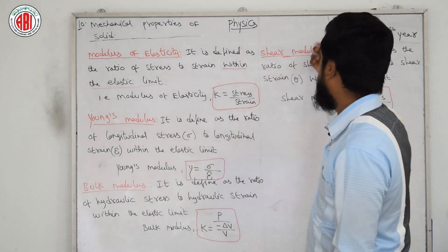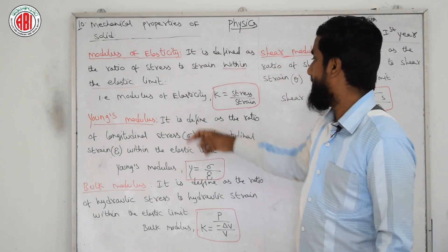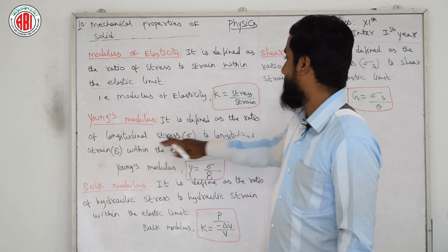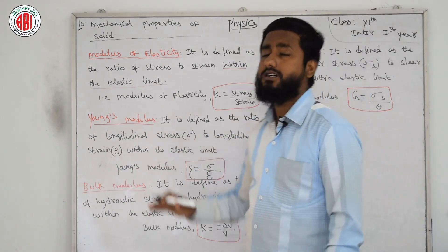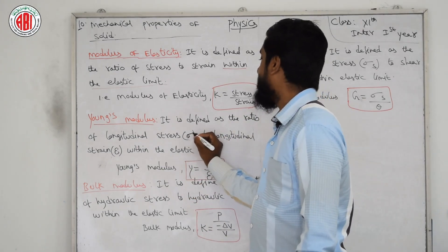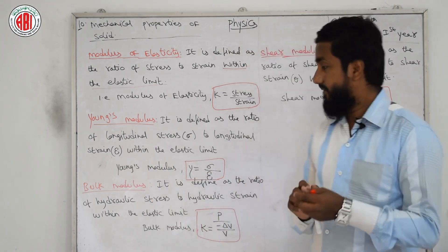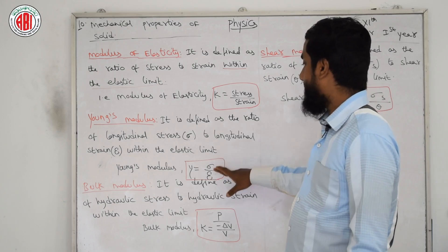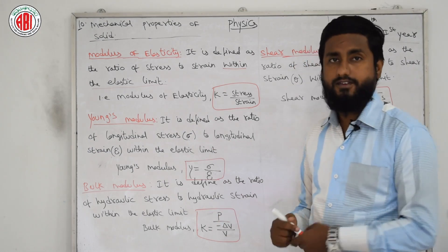Young's modulus — Y-O-U-N-G-S — is defined as the ratio of longitudinal stress to longitudinal strain within the elastic limit. Here, stress is denoted by sigma (σ) and strain is denoted by epsilon (ε). The formula is: Young's modulus Y = σ / ε.